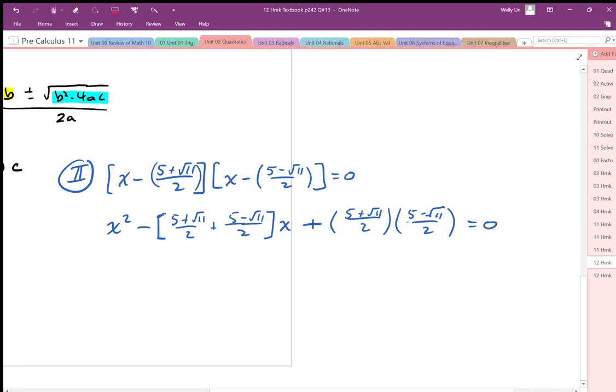Okay, so we can see inside the brackets here, we have a plus term and a minus term that are equivalent. So we get 5 over 2 plus 5 over 2. So this becomes x squared minus 5 over 2 plus 5 over 2 is 5.